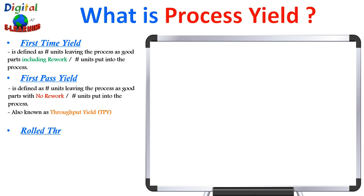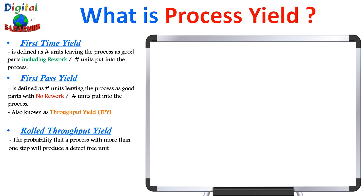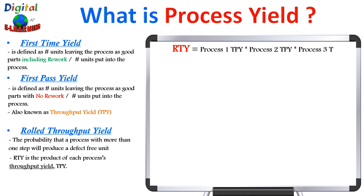Now let us see what is rolled throughput yield. First pass yield is only used for individual sub-processes, but when there are more than two or three or n number of processes, we use rolled throughput yield. Rolled throughput yield is the probability that a process with more than one step will produce a defect-free unit. It is the product of each process's throughput yield, or first pass yield, multiplied together: process one TPY × process two TPY × process three TPY, and so on.